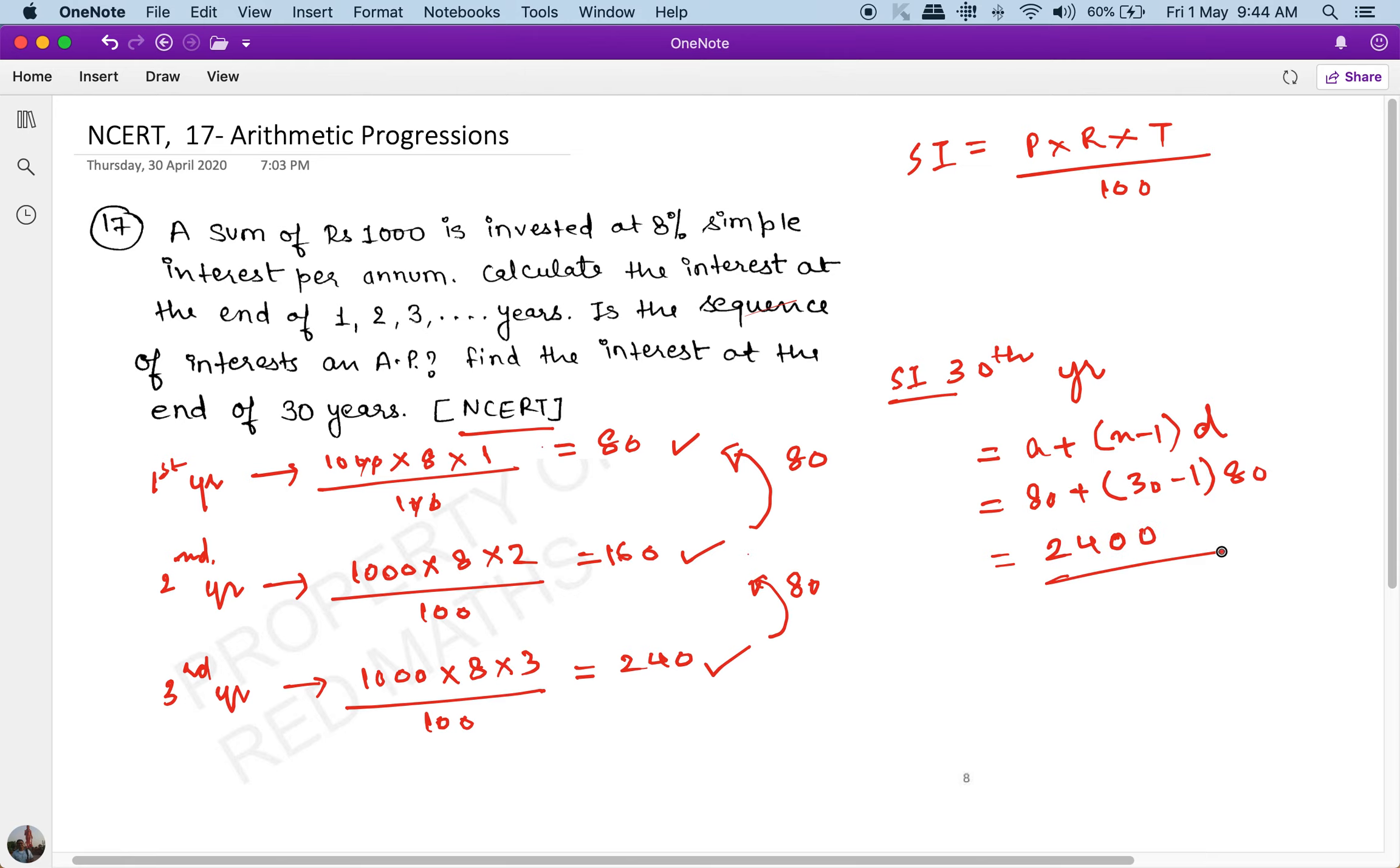You can also find it using the formula, which is P × R × T / 100, and see if you get the same answer. So the answer will be P, which is 1000, × R, which is 8 percent, × T, which is 30, / 100. This gets cancelled with this, and what you get is 2400, which is the same answer.